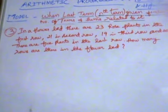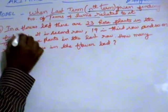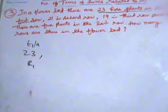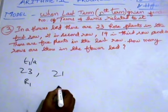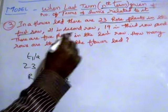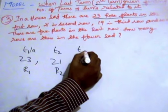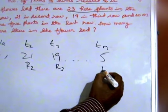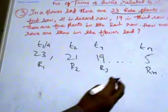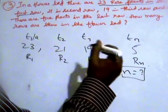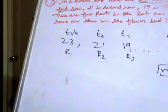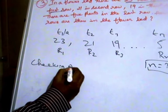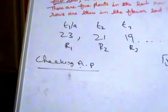Now a statement problem: In a flower bed, there are 23 rose plants in the first row (T1 = A = 23), 21 in the second row (T2 = 21), 19 in the third row (T3 = 19), and 5 plants in the last row (Tn). Find the number of rows N. First, we check whether it forms an AP.